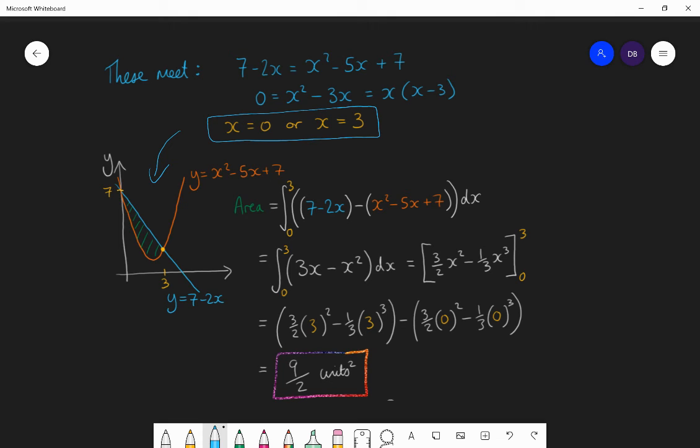And when x is 3, which is 3, 1. Then the area you want is the function on top, which is 7 minus 2x. Subtract the function underneath, which is x squared minus 5x plus 7. And if you find the simplified version of that expression of that difference, the 7 minus the 7 is 0. The minus 2x minus minus 5x is positive 3x. And you've got negative x squared. So you're integrating 3x minus x squared between the limits 0 and 3. And if you do that correctly, you should get 9 over 2 units squared or 4.5.